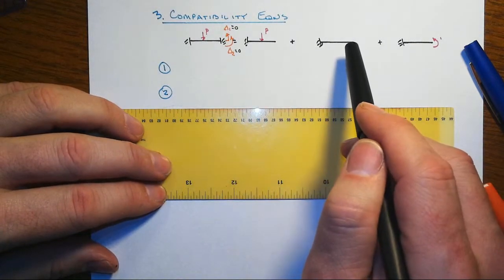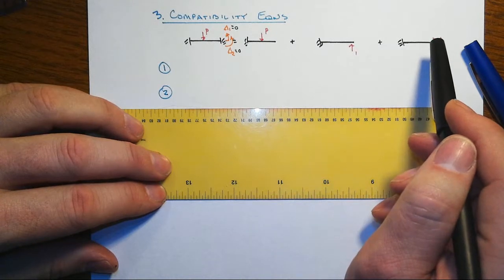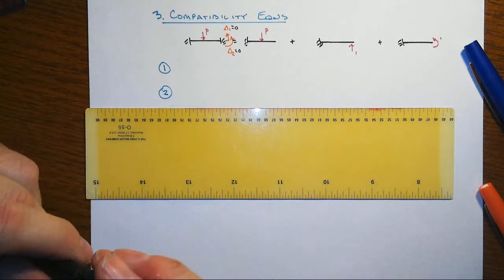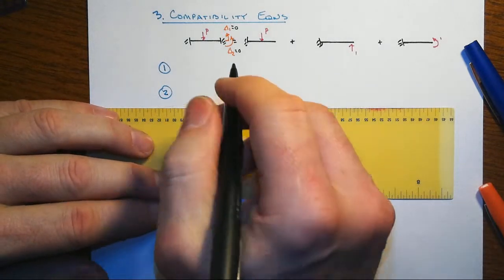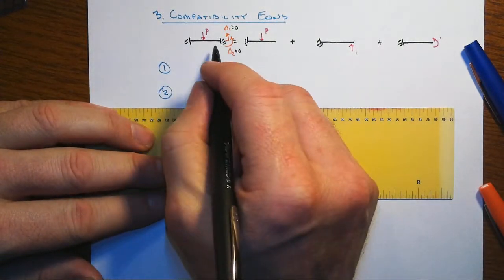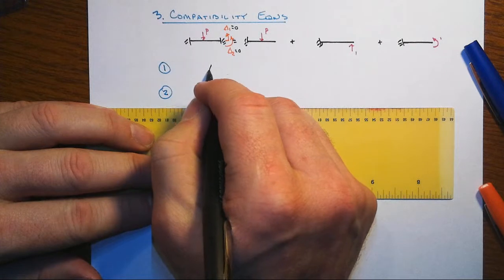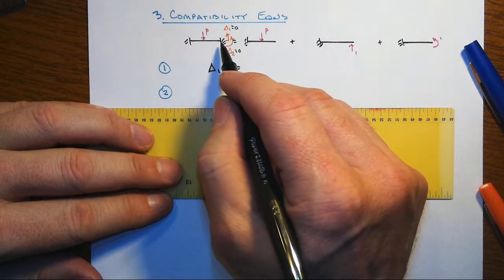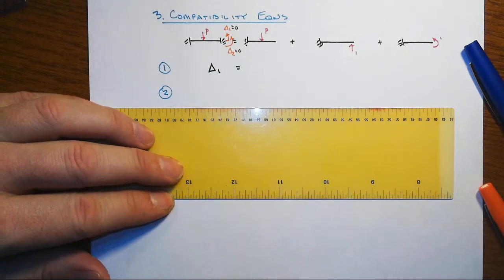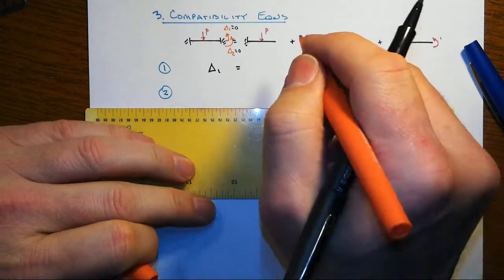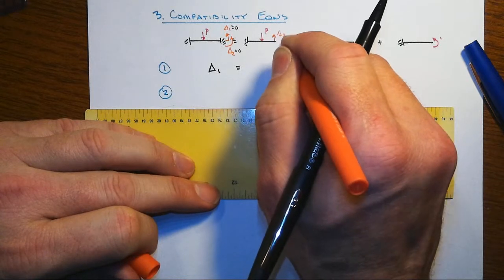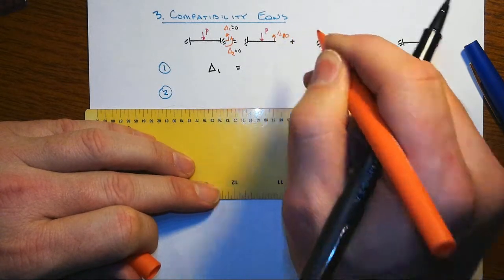Then we put one redundant reaction back into place and then the other redundant reaction. In the previous step we calculated all those displacements that went along with that. So for our first compatibility equation we'll focus on degree of freedom one: delta one will equal the displacement that happens at that location in that system plus the displacement that happens at that location in the primary system.